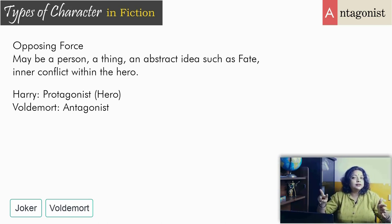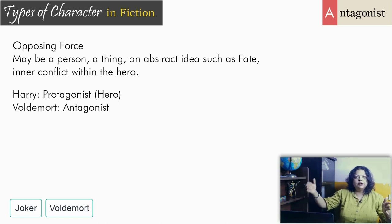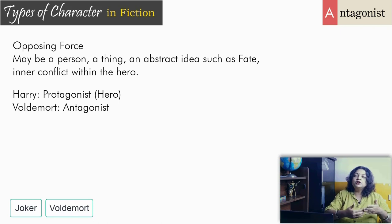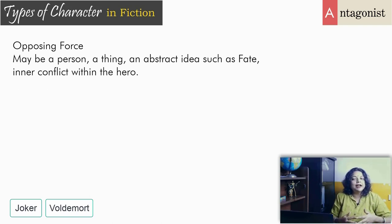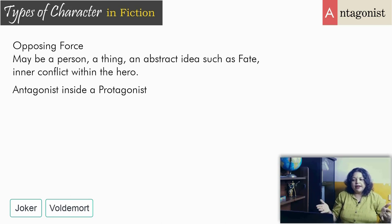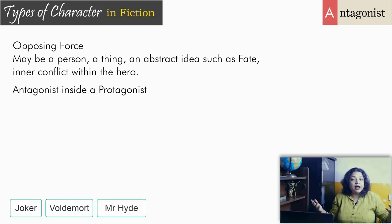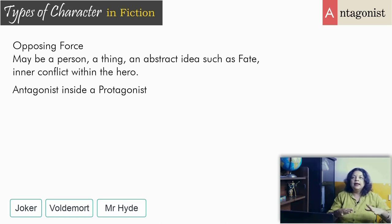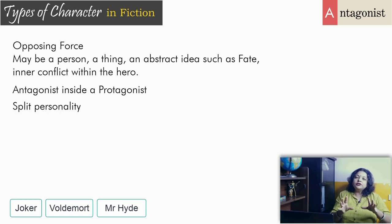Harry faces two antagonists: Lord Voldemort as a real physical presence, and that small part of Voldemort's soul inside him — which is nothing but a part of himself acting as the antagonist. When you have very complicated characters, the antagonist is often not outside but inside, and how they fight against their own demons becomes the story. This is very evident in The Strange Case of Dr. Jekyll and Mr. Hyde, where Mr. Hyde is the dark character and Dr. Jekyll is the protagonist — and it's the same person, a case of split personality.